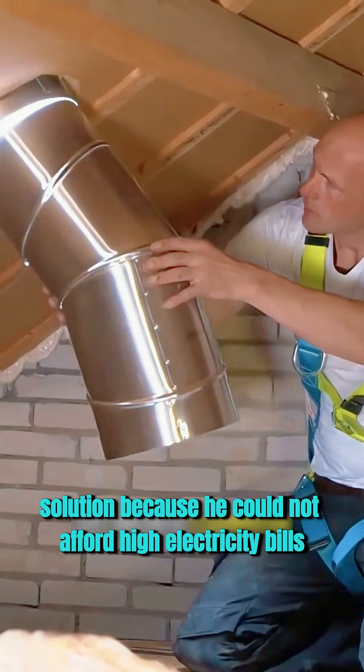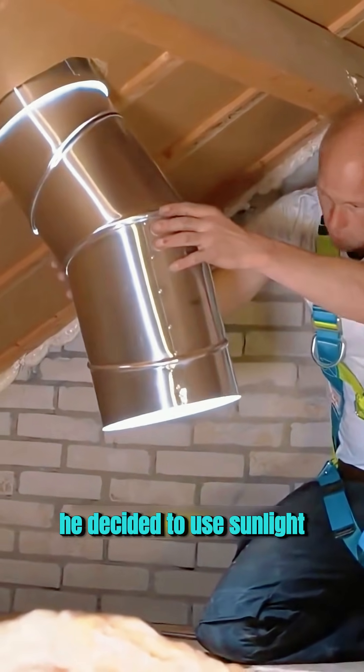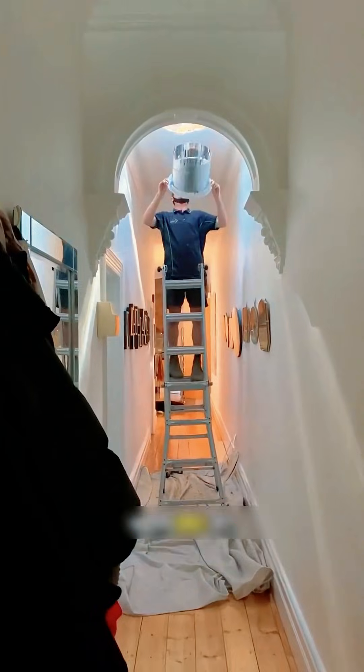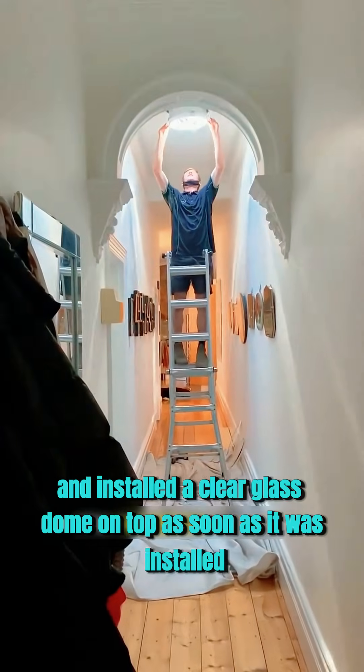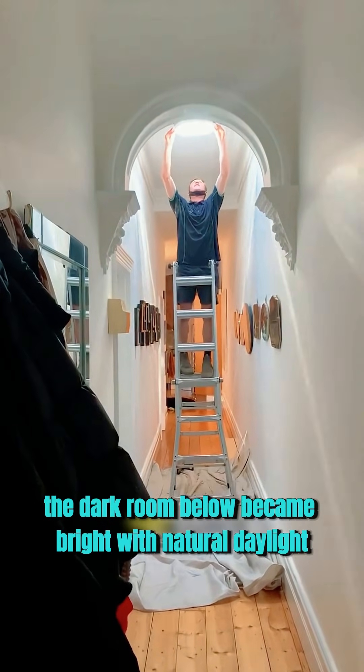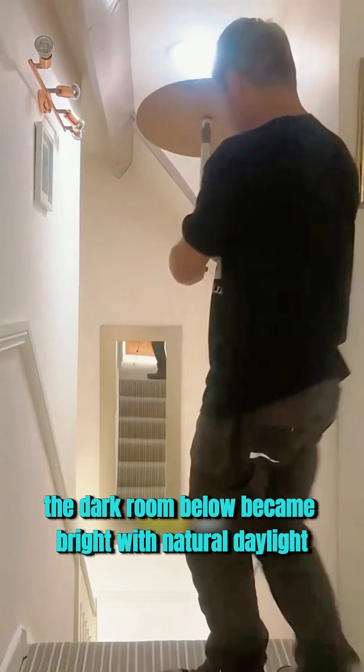Because he could not afford high electricity bills, he decided to use sunlight instead. He drilled a small hole in his roof and installed a clear glass dome on top. As soon as it was installed, the dark room below became bright with natural daylight.